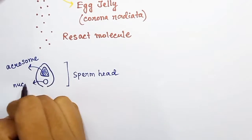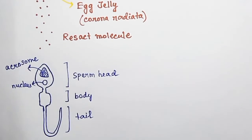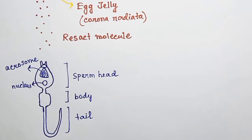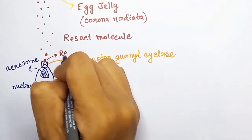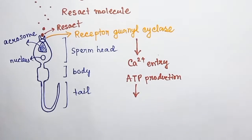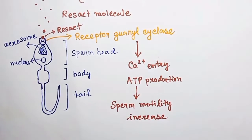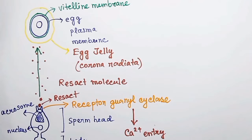So how will it attract the sperms? This is a sperm. The head of the sperm has acrosome and nucleus, and then the body and tail. On the head of the sperm, there is a receptor for the resact molecule. This receptor is known as receptor guanyl cyclase. This receptor will bind with the resact molecule. The binding of resact to the receptor will cause entry of calcium inside the sperm, and also it will increase the production of ATP, which will also increase the motility — that is, the movement of the sperm. So due to the resact molecule, the sperm motility increases and it reaches near the egg.